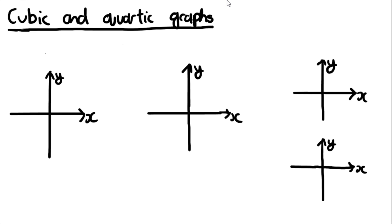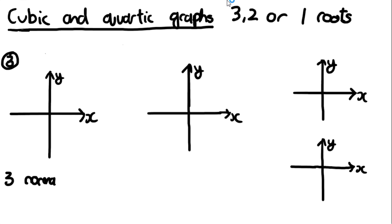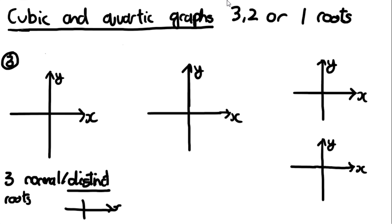I'm going to go through some other cubic graphs. A cubic can either have 3, 2, or 1 roots. When it has 3 roots, it's going to have 3 distinct roots. The term distinct just means a normal root where it passes through the x-axis. Distinct basically means it's not a repeated root, where it just touches the axis and comes back on the same side.